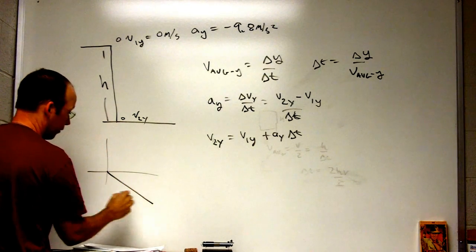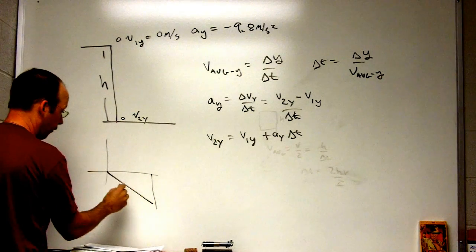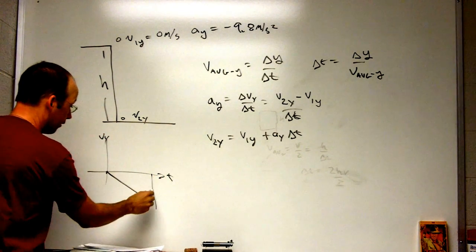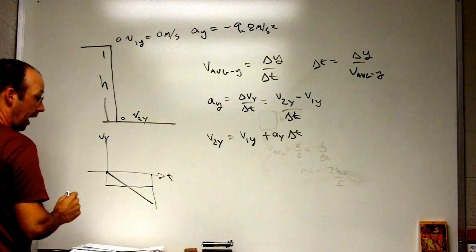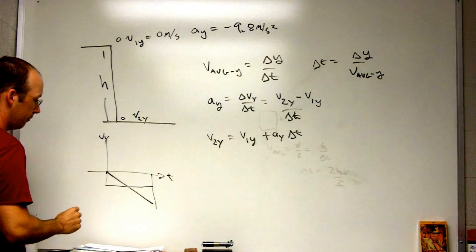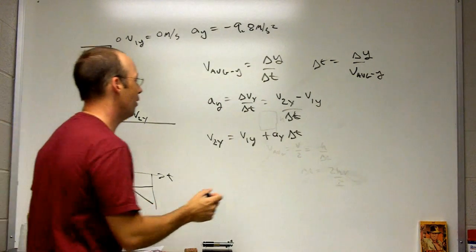So if I want to find the average, this is vy, this is t, the average in this case is going to be just halfway because it is a line.